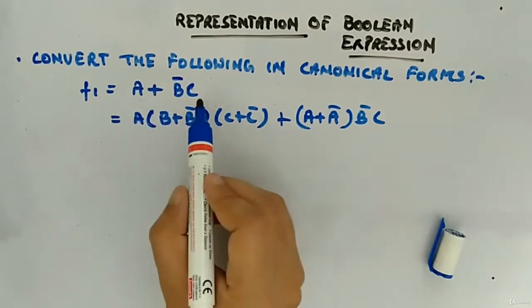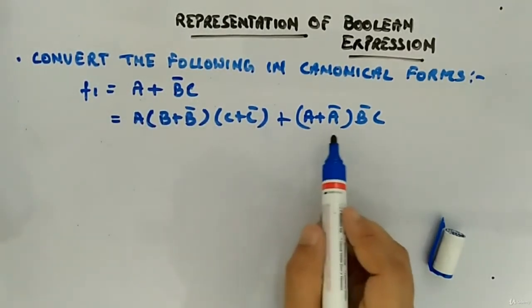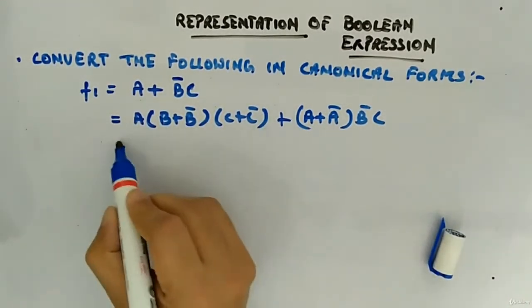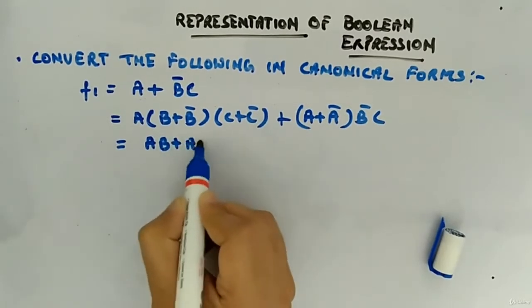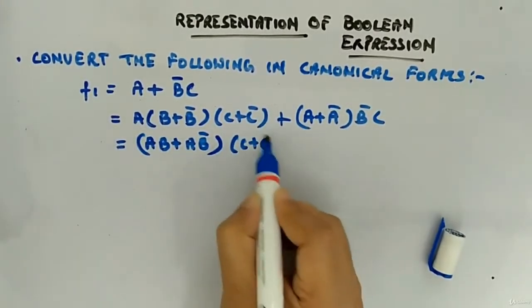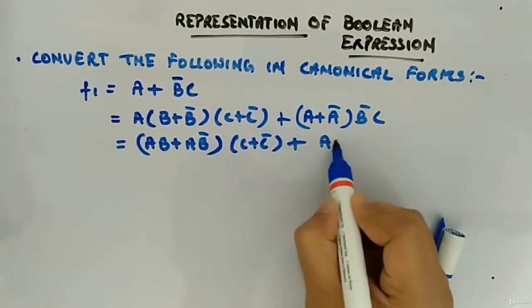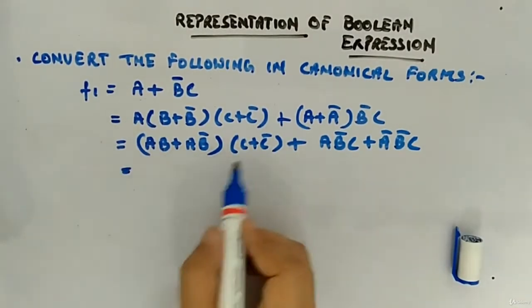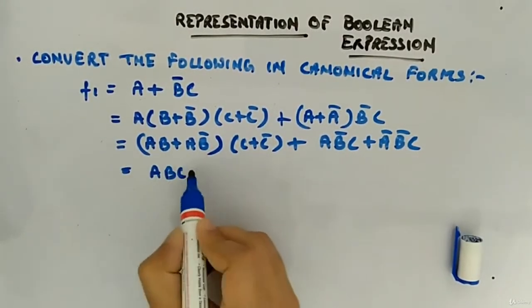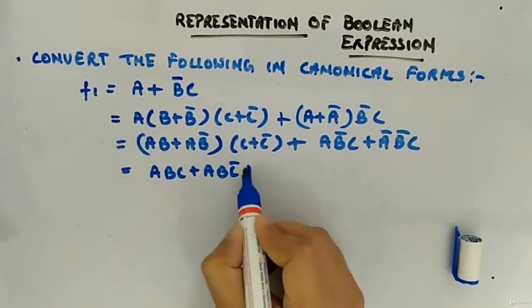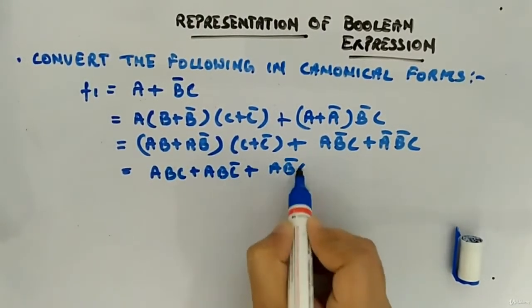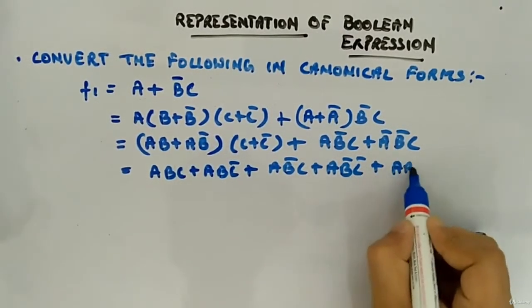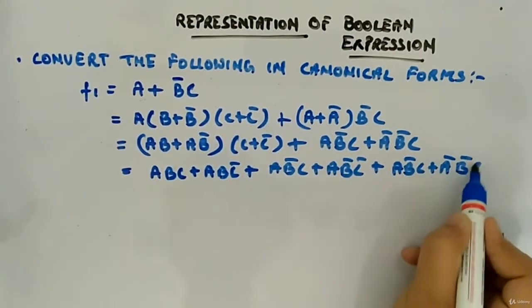Now this expression and this expression is same. There is no difference because these are one, these are one, these are one. Now what you do multiply and open the bracket. So what you will get here is AB plus AB bar multiplied with C plus C bar plus AB bar C plus AB bar C bar plus AB bar C plus AB bar C bar plus these two terms remaining AB bar C plus A bar B bar C.